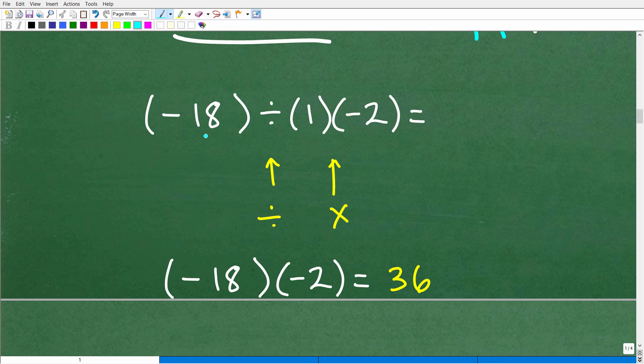Okay. So we're almost done. Negative 18 divided by a positive one. Pretty straightforward stuff. That's negative 18. And now we're going to take that negative 18 and multiply by negative two. A negative times a negative is a positive. So negative 18 times a negative two is a positive 36. Okay.